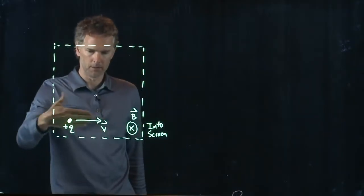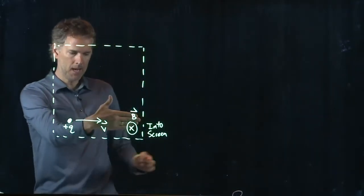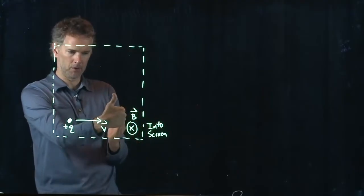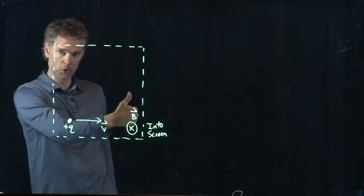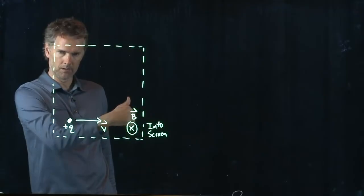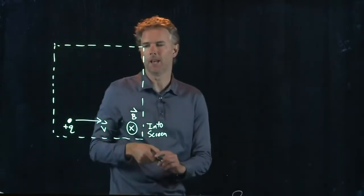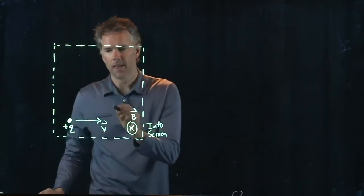V is going to the right. B is into the screen. So, I'm going to curl my fingers into the screen, right? That's to you what it looks like into the screen. Okay. And so, I'm going to end up with a force that is up.